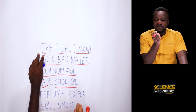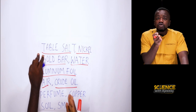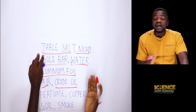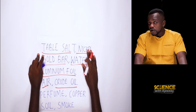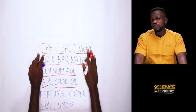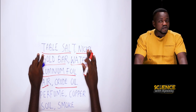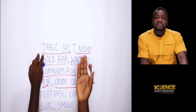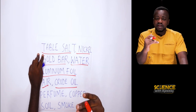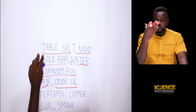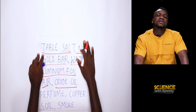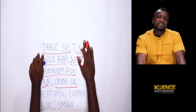A heterogeneous mixture is a mixture of two or more substances that do not mix. An example is oil and water. When you pour oil into water, the oil stays suspended and there is a visible separation. That is a heterogeneous mixture.